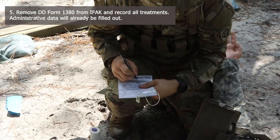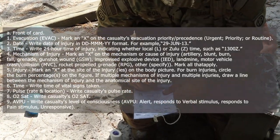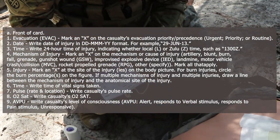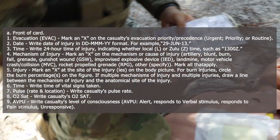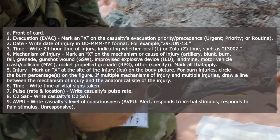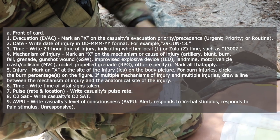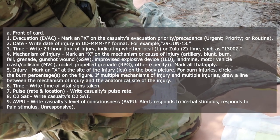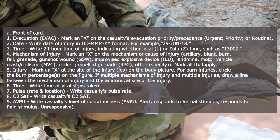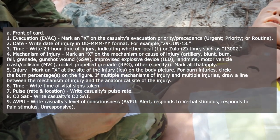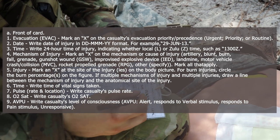The administrative data will be filled out on the front of the card. Mark an X on the casualty's evacuation precedence — urgent, priority, or routine. Write the date of injury in day, month, year format; for example, 29 June 2013.